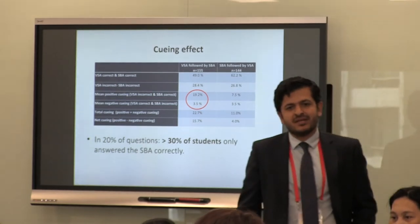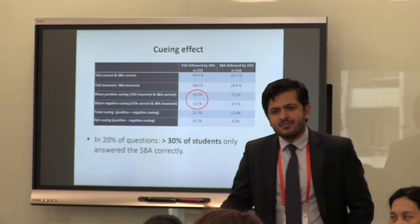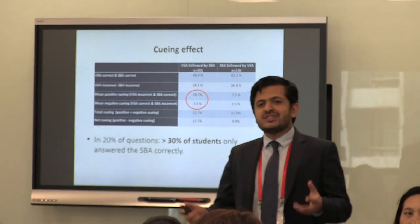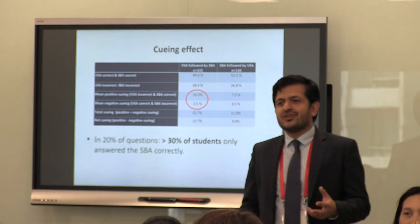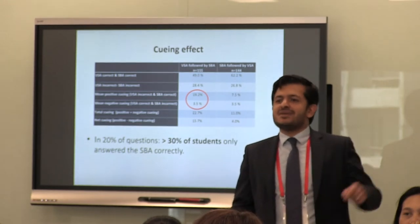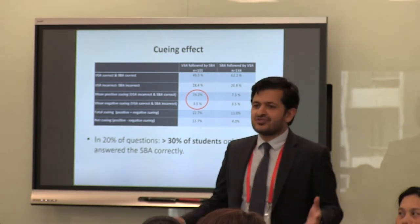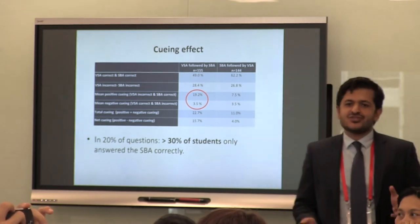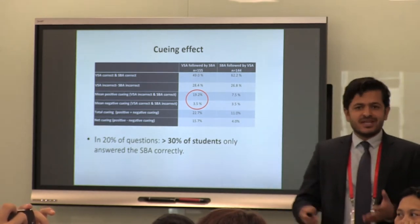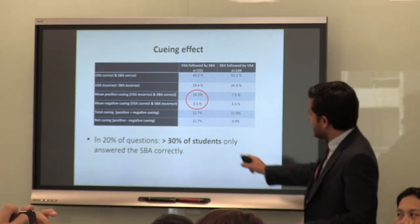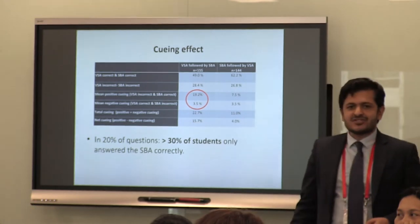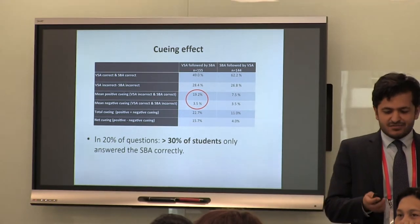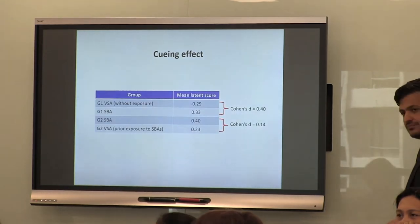In 20% of questions, more than a third of students only answered the SBA correctly — meaning they had no idea what the diagnosis or management was but got it right. There is also negative cueing at 3.5%: students who gave the correct answer in the VSA format knew the diagnosis or management, but got the SBA wrong because they thought there was a trick in the question. Somebody who actually knows what they should do but gets the SBA wrong — the negative cueing is actually more worrying.